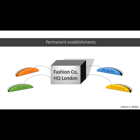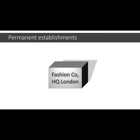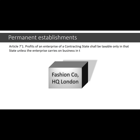The main use of the concept of a permanent establishment is to determine the right of a contracting state to tax the profits of an enterprise of the other contracting state. Article 7 says: profits of an enterprise of a contracting state shall be taxable only in that state unless the enterprise carries on a business in the other contracting state through a permanent establishment situated therein.